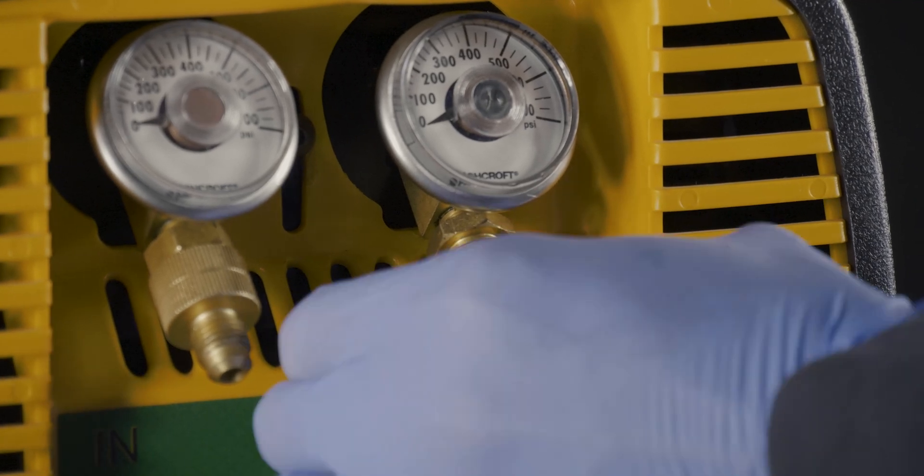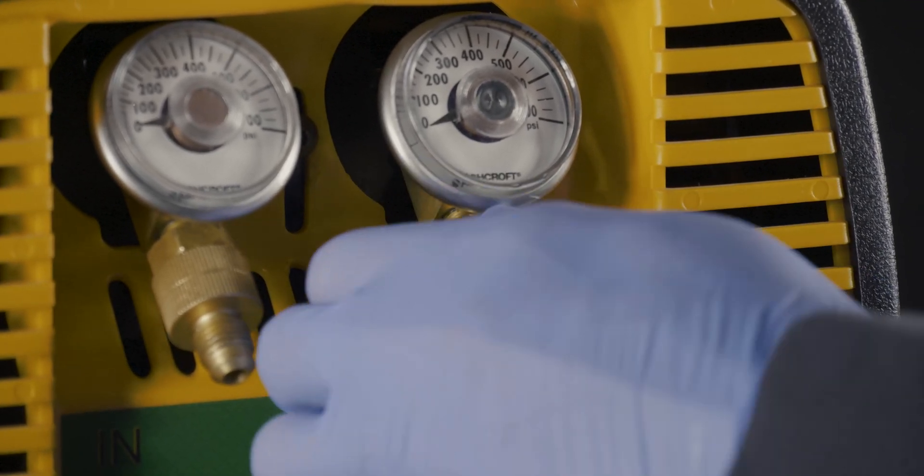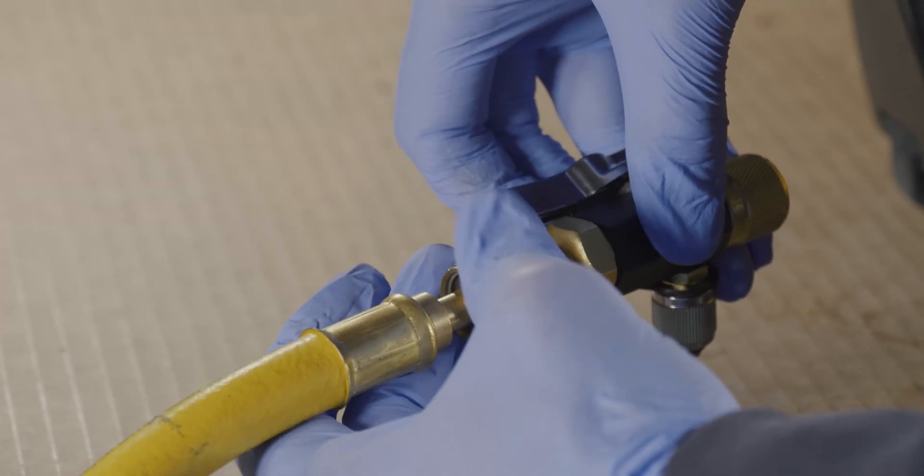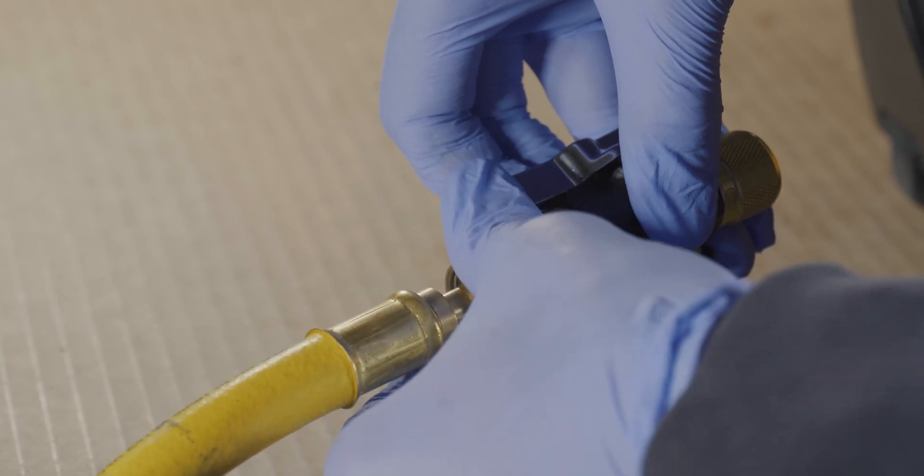Connect a known good 4-foot recovery hose to the output fitting of the machine. Then connect a known good valve core removal tool to the other end of the hose.